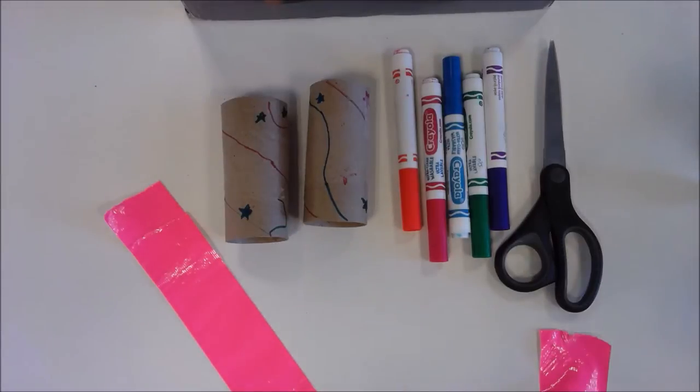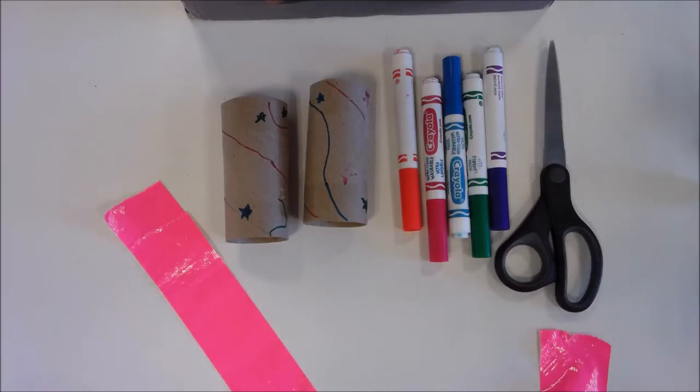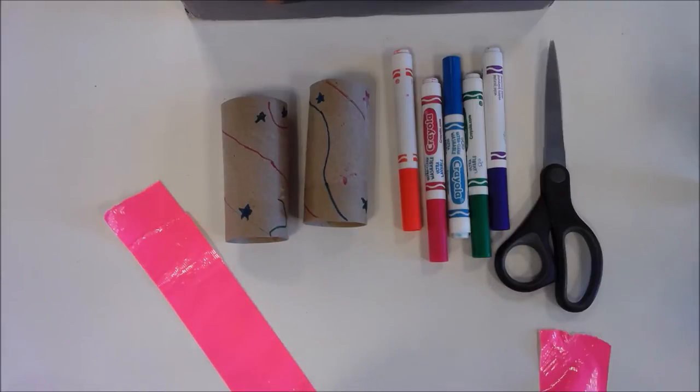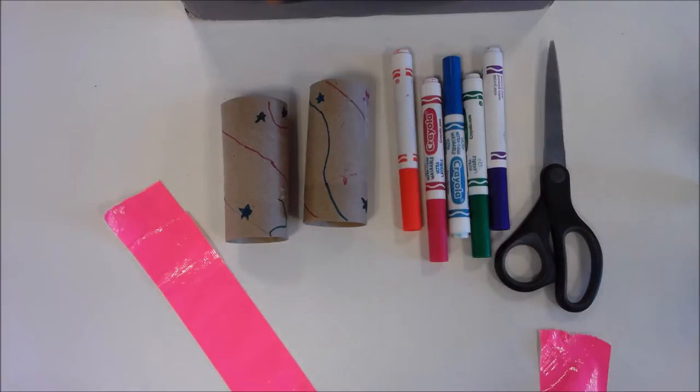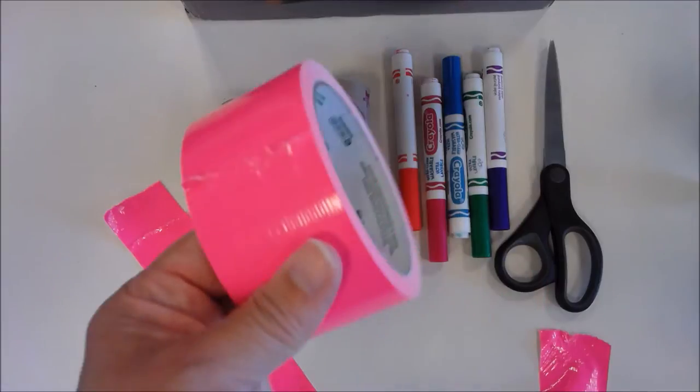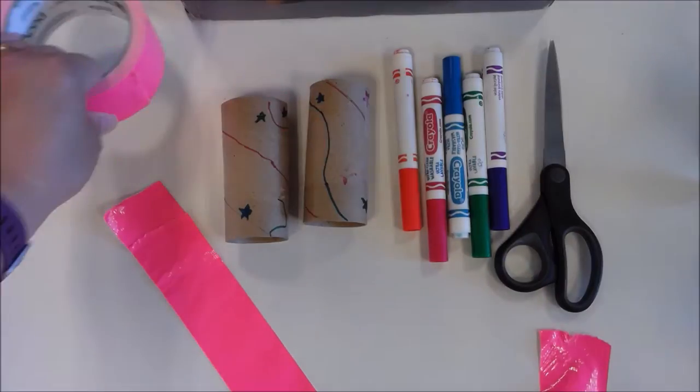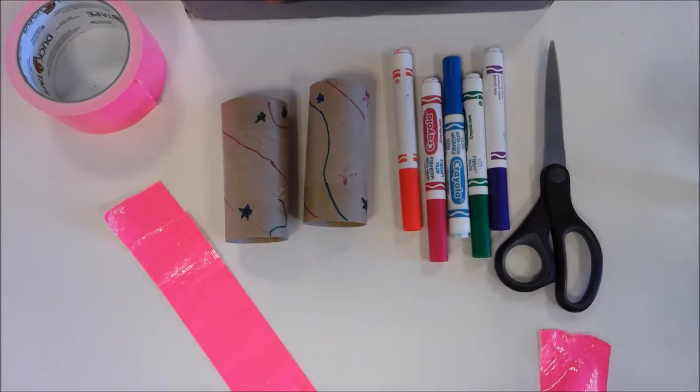Welcome back everybody! Now that we have all of our supplies together, it is time to make our binoculars. So I've got all my supplies out here. I have my two toilet paper tubes here, I've got some markers for decorating with, I've got my trusty roll of duct tape right here, and I think we're ready to go.